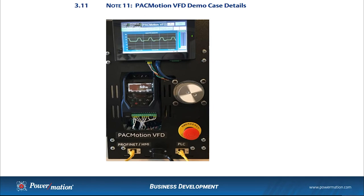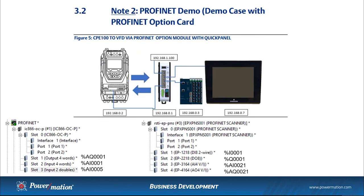This is a picture of the demo equipment we're going to be using today — just the front cover. You'll see we have a seven-inch Quick Panel control. We actually have an IC6-866 VFD drive with a motor, emergency stop switches, and all the wiring behind the hood. The overall one-line diagram of the communication network shows the IC866 series variable frequency drive connected on an ethernet connection back to the Profinet controller.